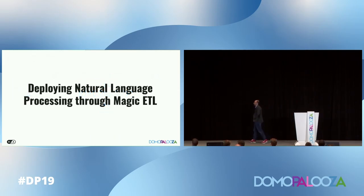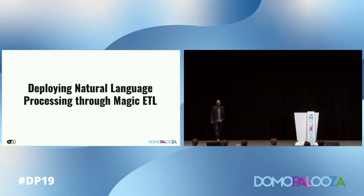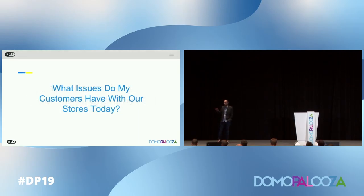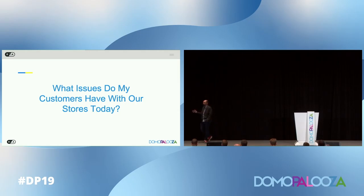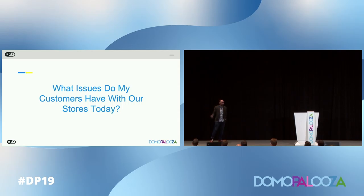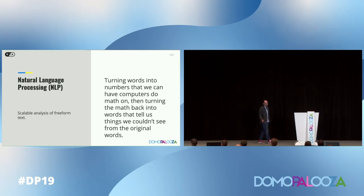Now we're going to get into our second case — how we can deploy natural language processing through the Magic ETL in Domo to solve a specific use case. What we want to look at is: what issues do our customers have with our stores today? We get tons of data back from customers — public conversations on the internet, feedback from reviews, phone calls from your complaint center that you can do voice-to-text translation on. There's a lot of data around what people are talking about, but you have to make that actionable. The process of making that actionable all falls under the heading of natural language processing.